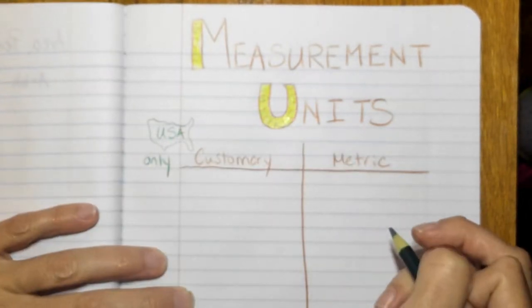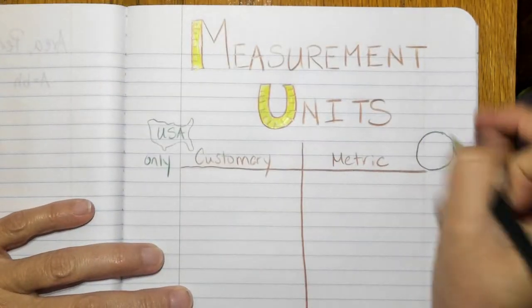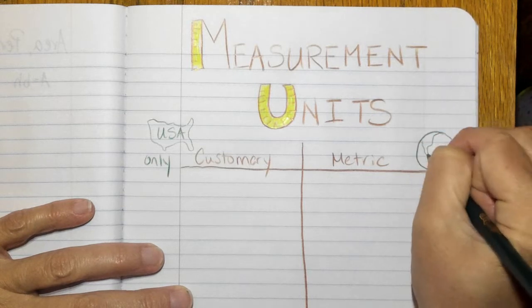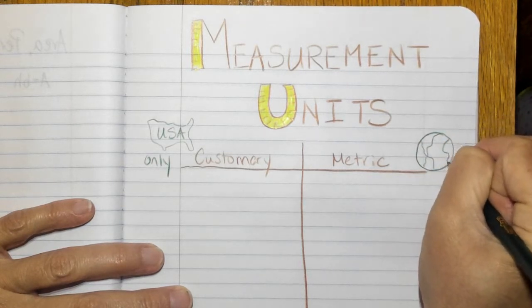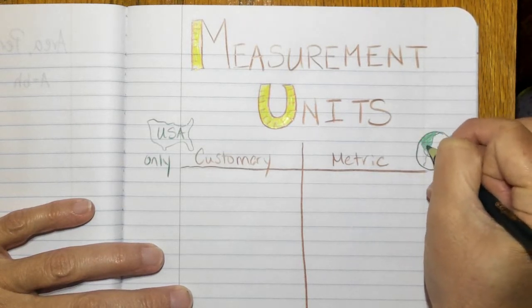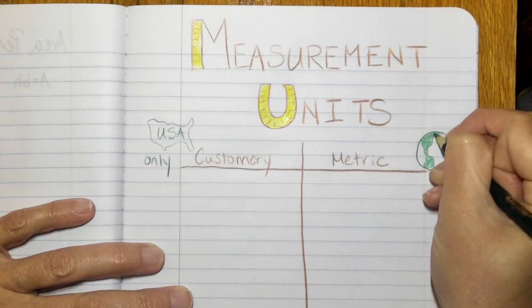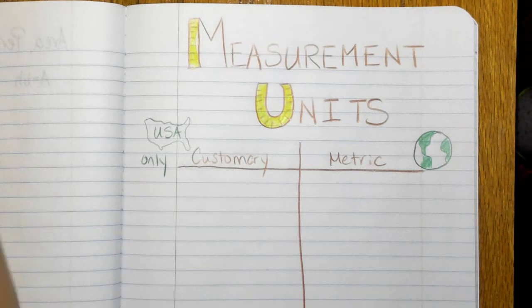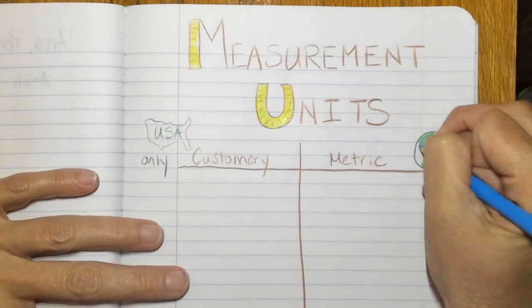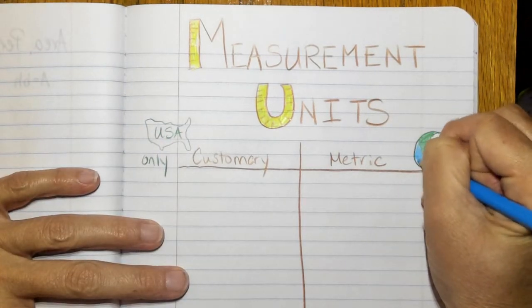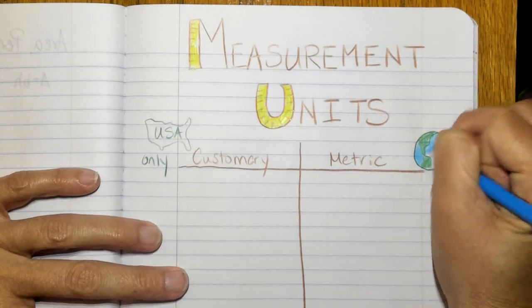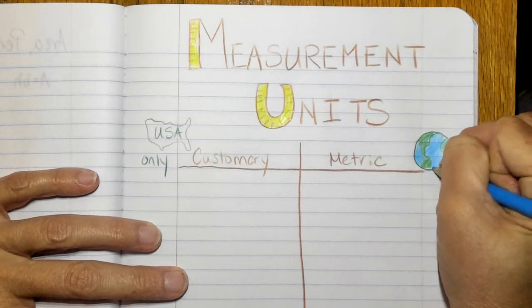And metric would be what is used by, you guessed it, the whole rest of the world. So here in the United States we have to know how to use customary because that's what we like to use, but since the whole rest of the world uses metric that's what we have to learn too.